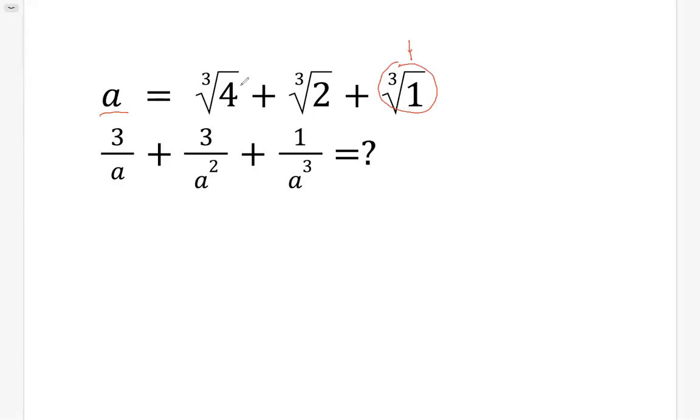Right? Cubic root of 2, and what is the relationship between cubic root of 4 and cubic root of 2? This is cubic root of 2 squared. So this looks like if we call b equals cubic root of 2, and we see this one is b squared plus b plus 1.